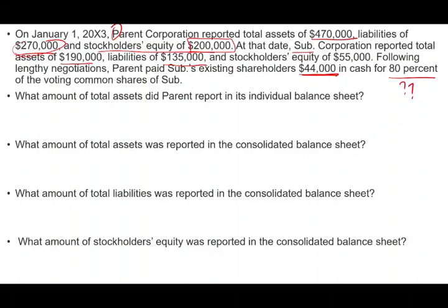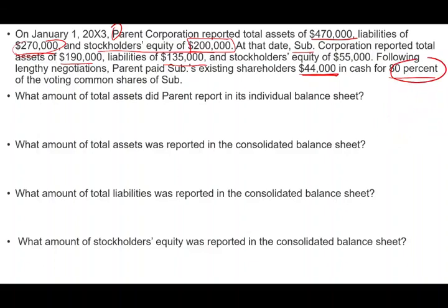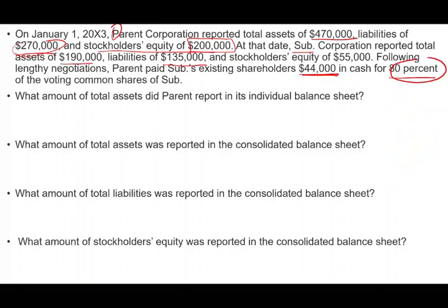Buying 80% means they are going to consolidate because they purchased more than 50%. Be careful — for tax purposes you need 80%, but for financial reporting, all you need is more than 50%. Some students see 75% and say we don't need to consolidate because it's not 80% — not at all. For FAR, all you need is 50% to consolidate, and you do the consolidation as if you purchased 100% and account for NCI, which we'll talk about shortly.